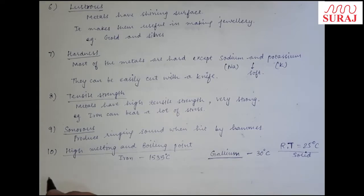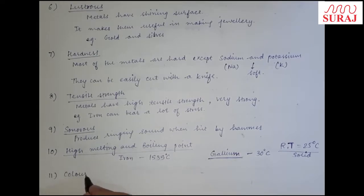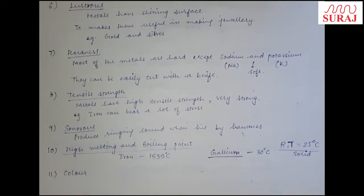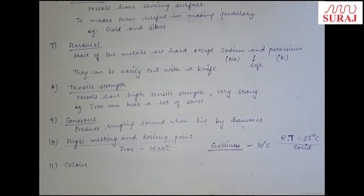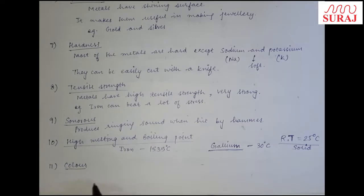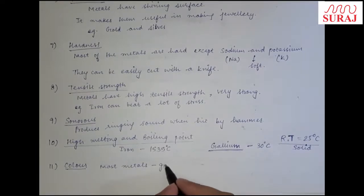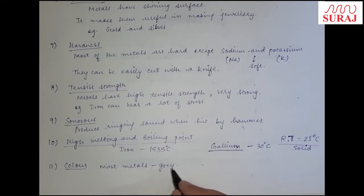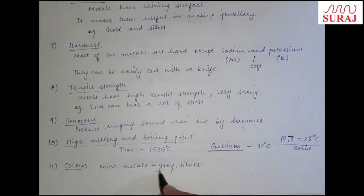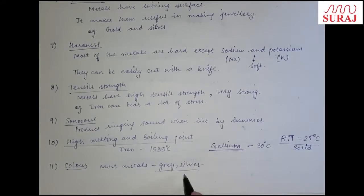Last property is color. हर metal का अपना अलग color हो सकता है, लेकिन most metals greyish या silverish grey color के होते हैं।